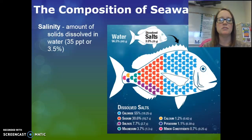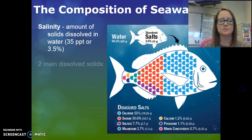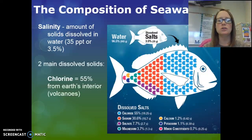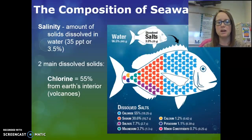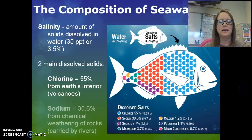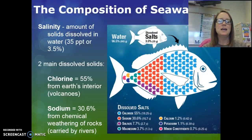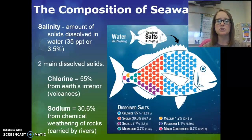That means for every 1,000 parts of ocean water, there are 35 parts of salt. The two main dissolved solids are chlorine and sodium, which combined make sodium chloride. 55% of the elements found are chlorine, and that comes from Earth's interior — volcanoes erupt on the ocean floor or on land, and it runs off into the water. Sodium is the second most abundant dissolved solid, and it comes from the chemical weathering of rocks on land, then is carried by rivers into the ocean. So that's where the salt comes from: runoff from the land and underwater volcanoes.